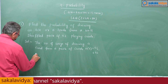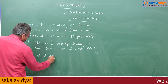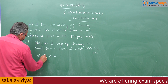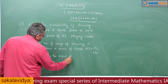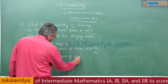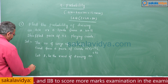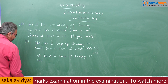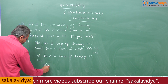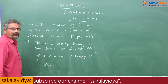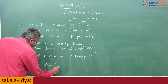Now let E1 be the event of drawing an ace. n(E1) is equal to — how many aces will be there? There will be 4 aces; we have to select 1, that can be done in 4C1 ways, so 4.